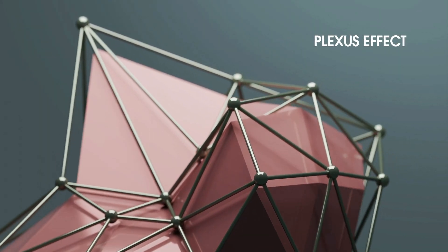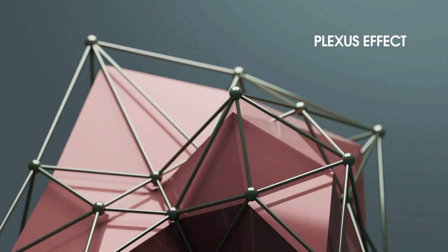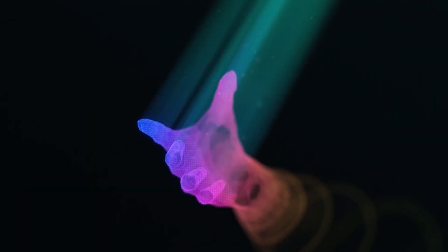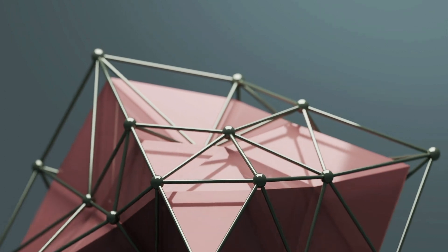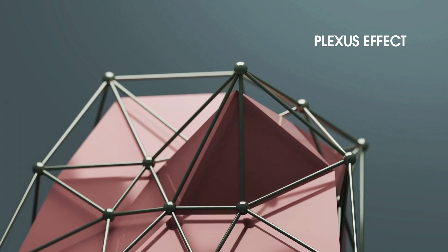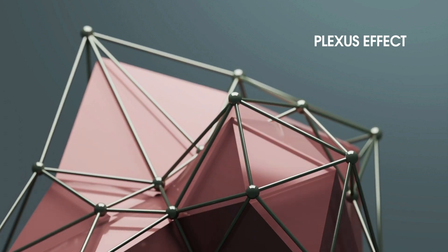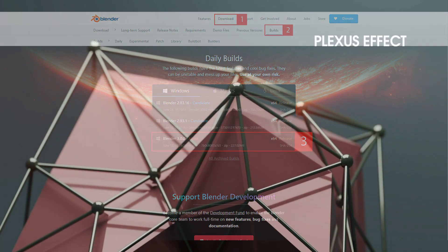Hi guys, welcome to my channel. I'm Zhong. Today I'm going to share with you how to create the plexus effect in Blender 3D 3.0 alpha version. If you aren't aware of what the plexus effect is, it's basically a plugin for After Effects that allows you to create interesting connected vertex points very easily. In Blender we don't have to use any plugin. In this tutorial we are going to learn some of the new geometry nodes in Blender 3D 3.0, so if you haven't downloaded it yet, please go to the Blender official website and find it under the download page.